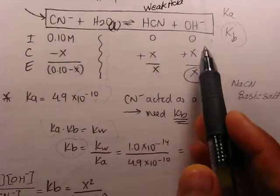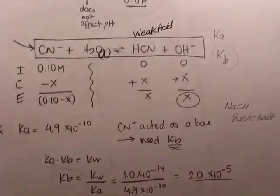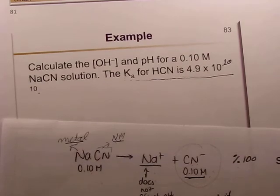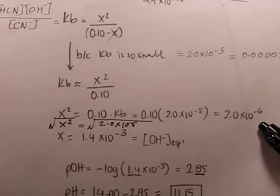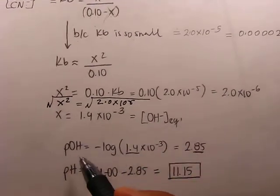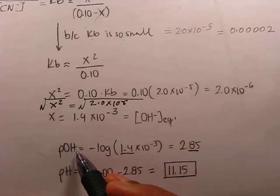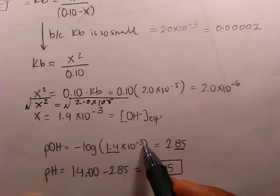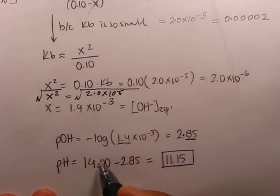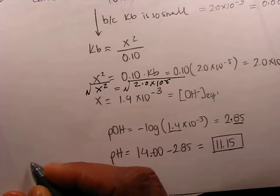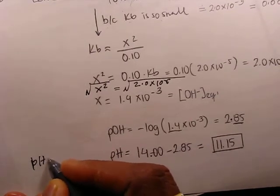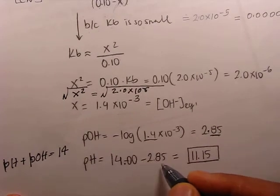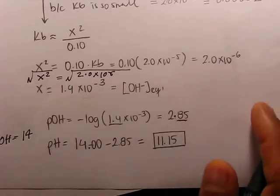Now we calculate pH. First, we calculate pOH: pOH equals negative log of the hydroxyl ion concentration, so negative log of 1.4 times 10 to the minus 3, which equals 2.85. Then using pH plus pOH equals 14, pH equals 14 minus 2.85, which gives pH approximately 11.15.